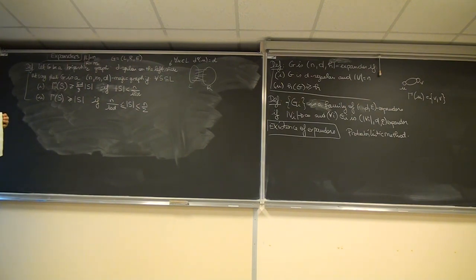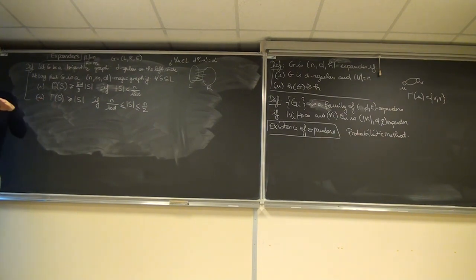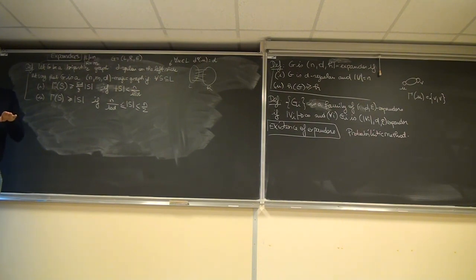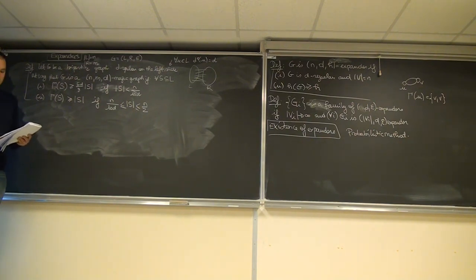Usually when we use the probabilistic method, there is some kind of phase transition: as the degree increases, the expansion property becomes more and more likely. On both sides of the phase transition, you can use very crude bounds. Before the transition it's completely unlikely, but once it's likely, it's very, very likely. So the key in this kind of proof is to use the most crude bounds you can.